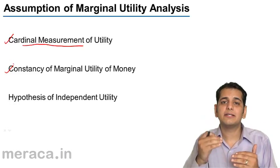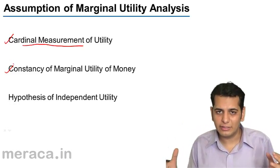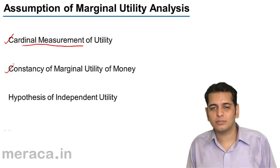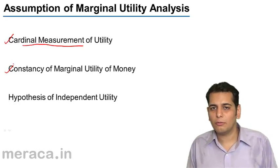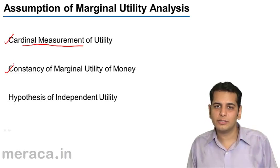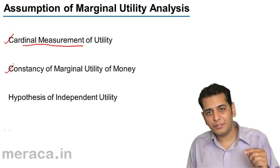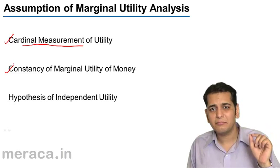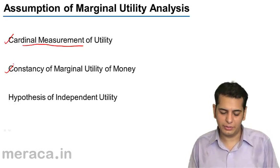Your satisfaction level and happiness level will keep increasing. But in this topic, it is assumed that the marginal utility of money is constant — that is, every rupee gives the user the same level of satisfaction or utility.